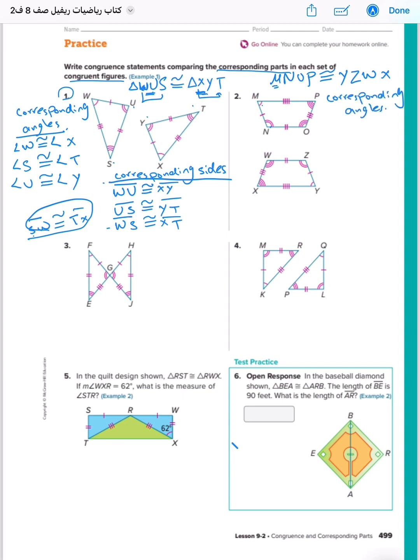M with what? With Y. M with Y, so I will write from here. Angle M congruent to angle Y. Angle N, it's congruent from here, from the name, congruent to angle Z. Angle O, it's congruent to angle W. Angle P, it's congruent to angle X. You can check from the figure. We finish corresponding angles.